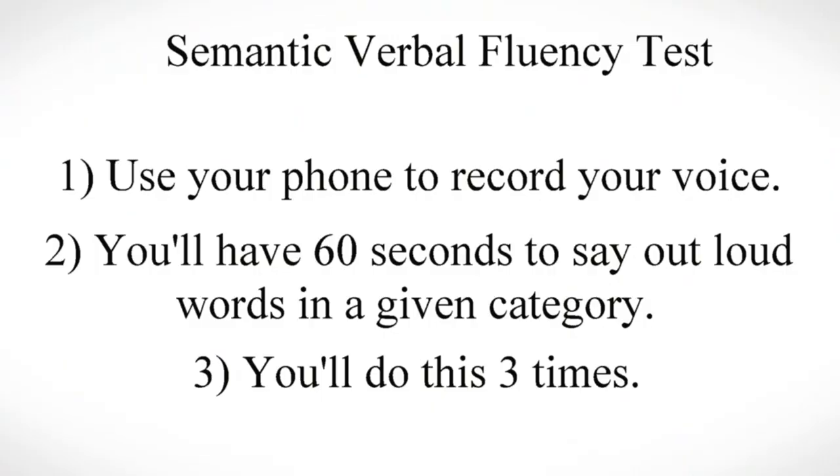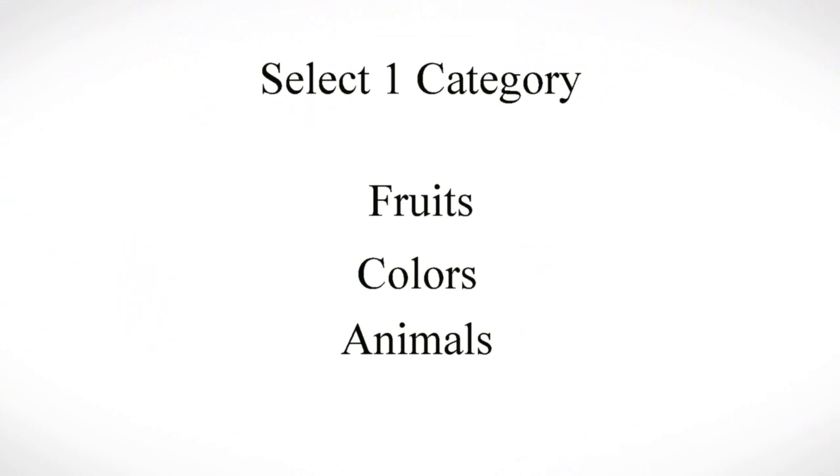Some people are really good at semantic but not so much with phonemic, or vice versa, so this is a great test to see which one you might be better at. If you're interested in the topic of fluency in general, or if you'd like to double your verbal fluency average in less than 30 days, click the description below. Now let's get into the semantic fluency test. Use your phone to record your voice — each section will take 60 seconds. Semantic fluency is category based, so name off as much as you can in these specific categories. Go ahead and select one category. Ready? 3, 2, 1, go.